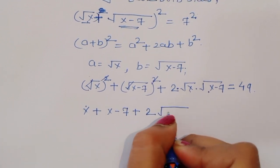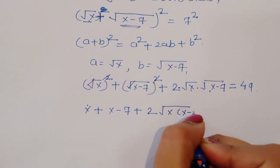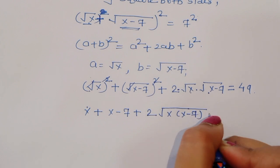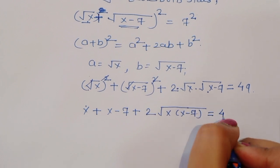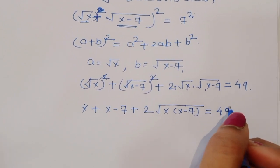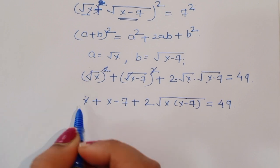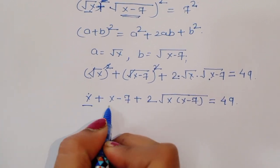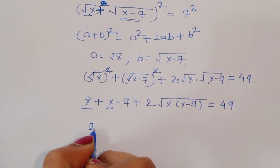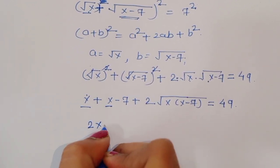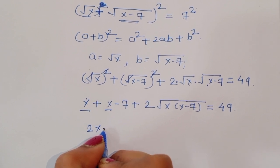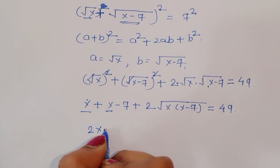We can write this as: x plus x minus 7 equals 49, so that gives us 2x minus 7 plus 2 times square root of x times x minus 7 is equal to 49.